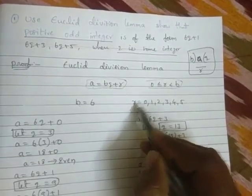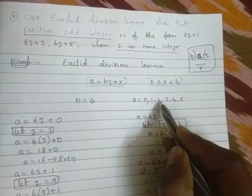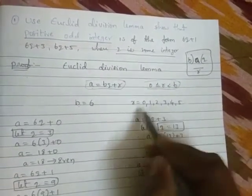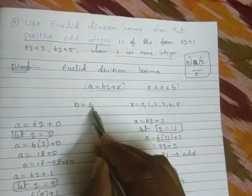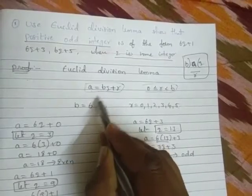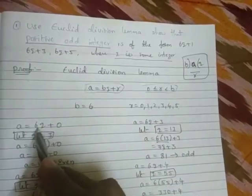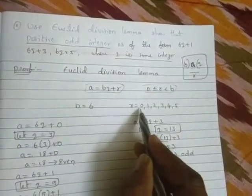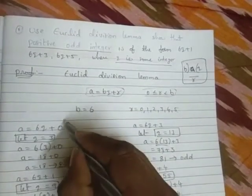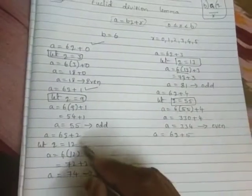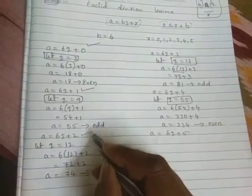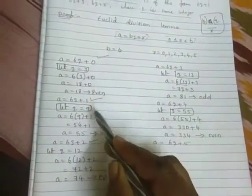Now b = 6, then what about r values? It should be 0, 1, 2, 3, 4, 5. In the place of r I will substitute all of these, but b = 6 only. See in the formula I will substitute b = 6. But in the place of r, I will try with 0. I am keeping right marks here.